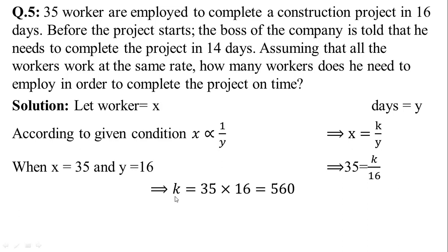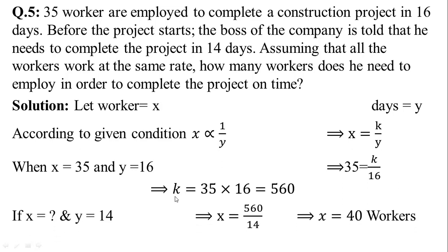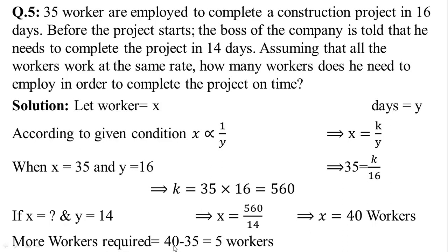35 multiplied by 16 is equal to 560, so the value of k is 560. Now we will find the remaining condition. If days y is equal to 14, we can find the workers x. Then x equals 560 divided by 14, which implies x is equal to 40 workers. The question asks how many more workers he needs, so more workers required equals 40 minus 35, which is 5 workers.